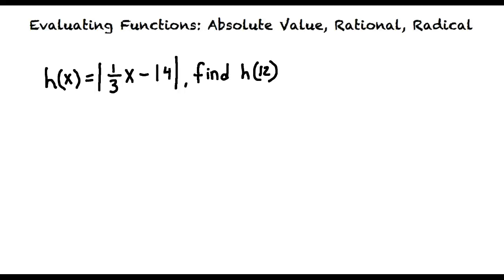When solving this problem we substitute in 12 for x in the equation, and this results in 1 third times 12 minus 14. Now we can simplify the expression inside the absolute value sign. 1 third times 12 is 4.